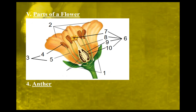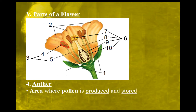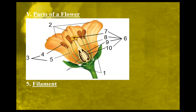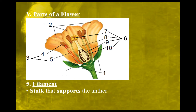The anther is the top portion of the stamen — it looks like a little brown portion of the plant. That is the area where pollen is produced and stored. The filament is the stalk that supports the anther. So the stamen consists of the anther, which produces and stores pollen, and the filament, which simply supports the anther.